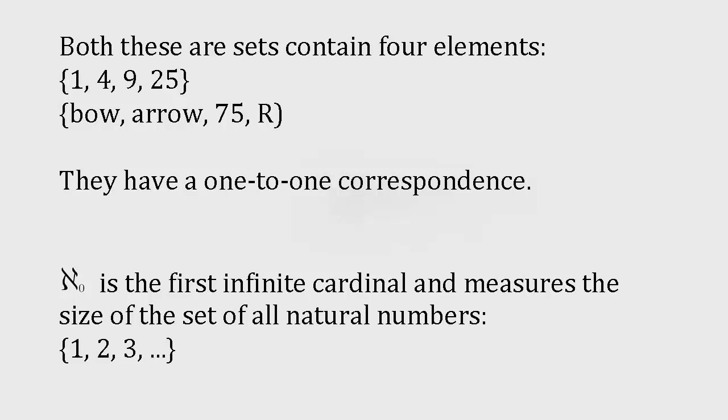Both the sets just mentioned have 4 elements, and so have a cardinality of 4. If the cardinality of 2 sets is the same, then every element in the first set can be paired off with 1 in the second, so that nothing's left over. In other words, they have a 1-to-1 correspondence. For example, we can pair 1 with 75, 4 with arrow, 9 with R, and 25 with bow, to show that these sets have the same cardinality.